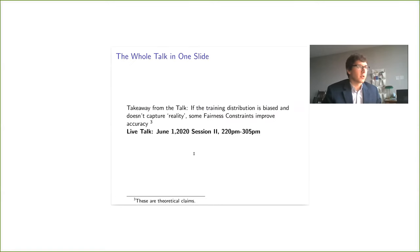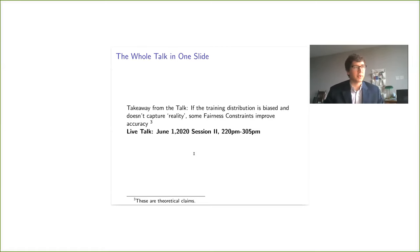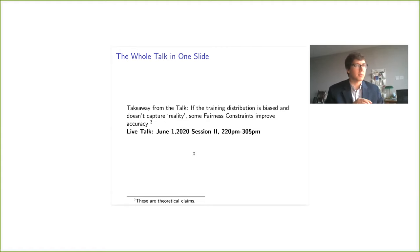So let's get into it. If you have a very short attention span, this whole talk exists in this slide. The takeaway from the talk upfront is that this is a paper in fairness and machine learning. If we make some assumptions on how the training data distribution is biased — so the training data we use to learn our classifier doesn't capture reality — some fairness constraints actually improve accuracy.